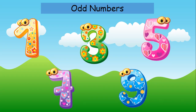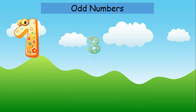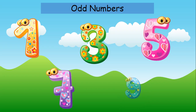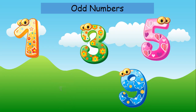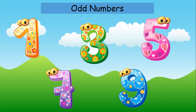Let us sing once again. Let's sing. They are numbers we should know and they are called the odd. 1, 3, 5, 7, 9. 1, 3, 5, 7, 9. 1, 3, 5, 7, 9. And these numbers are the odd. Now you know the odd numbers.